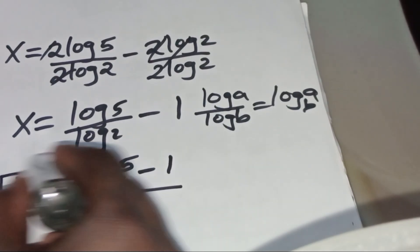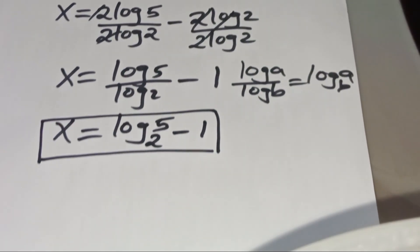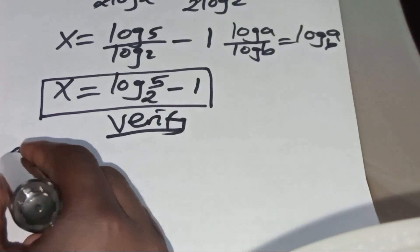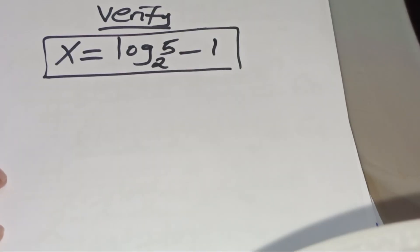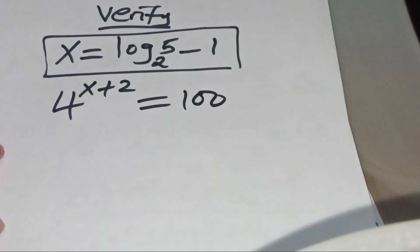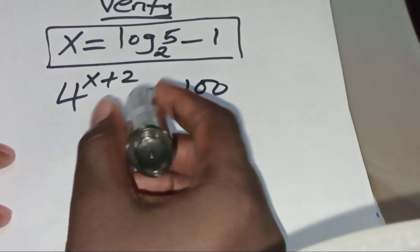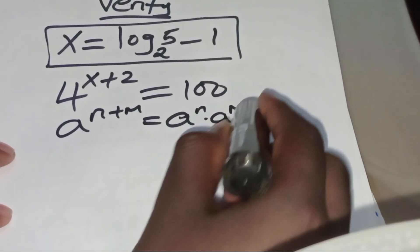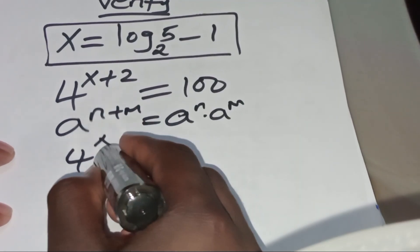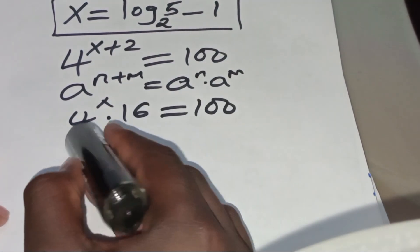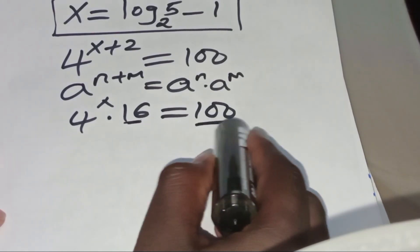Now this is the value of x. Let's verify that this value of x, which is log base 2 of 5 minus 1, actually satisfies the equation. Recall we had 4 to the power x plus 2, which should give us 100. Now 4 to the power x plus 2 is in the form of a raised to the power n plus m, which we can express as a to the power n multiplied by a to the power m. So this is 4 to the power x multiplied by 16, which should give us 100.